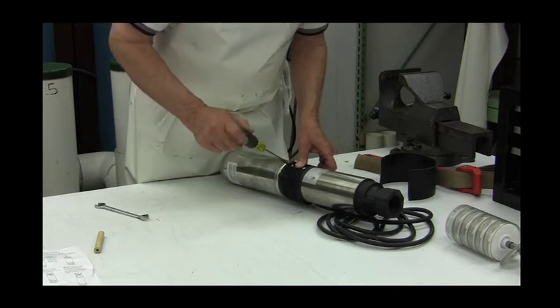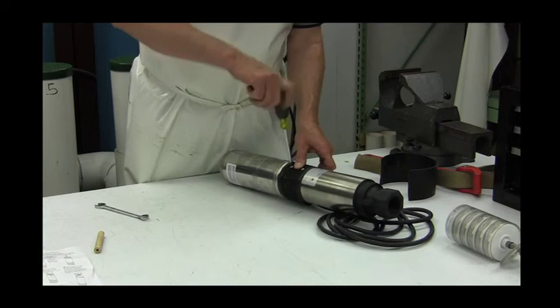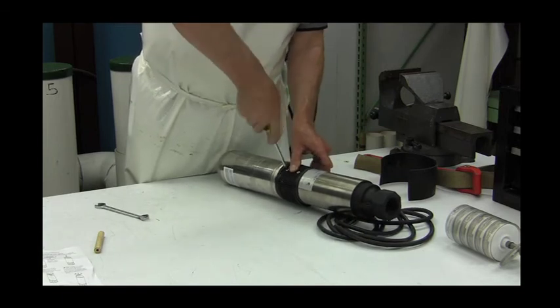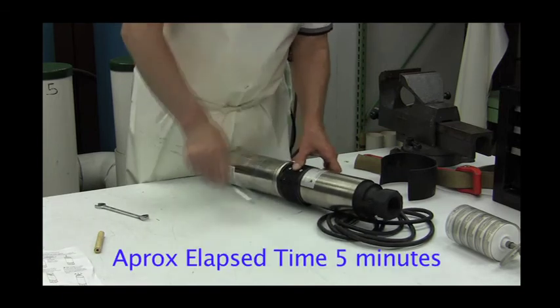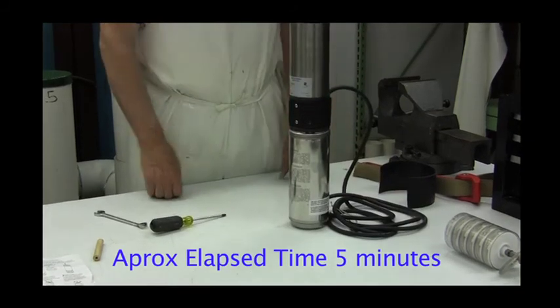You have now successfully rebuilt your P-Series 10 Gallon Per Minute Pump. Do you know what caused the problem initially? Do you know how to prevent the problem in the future?